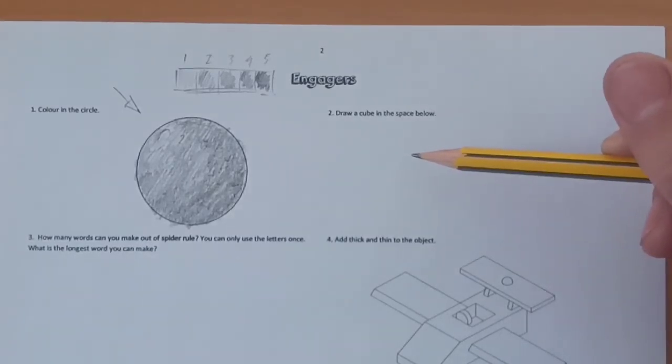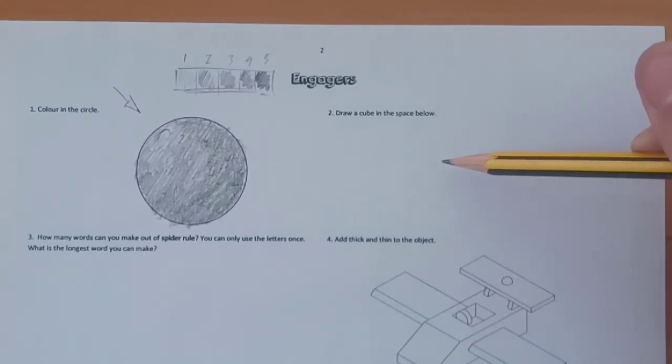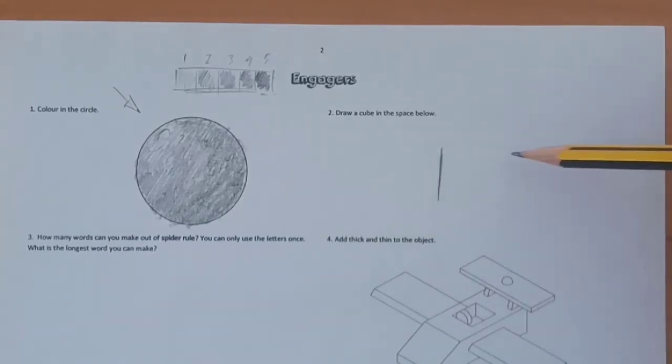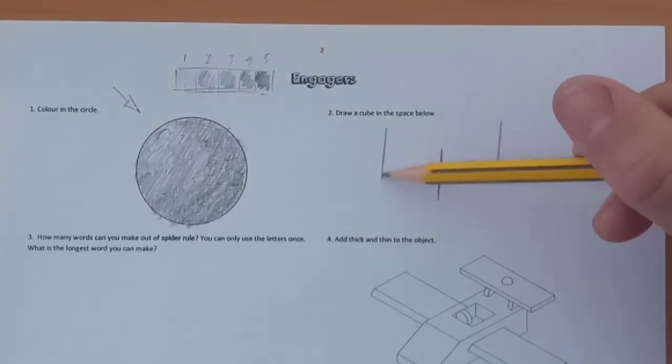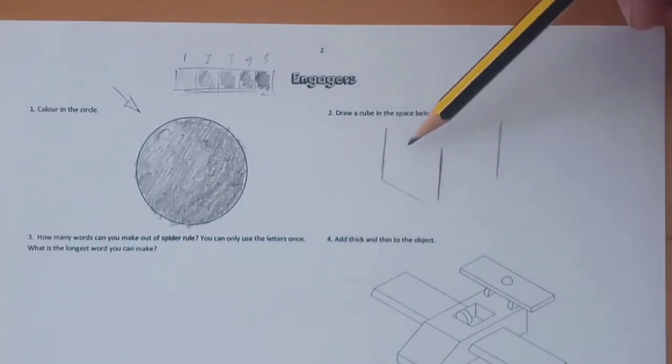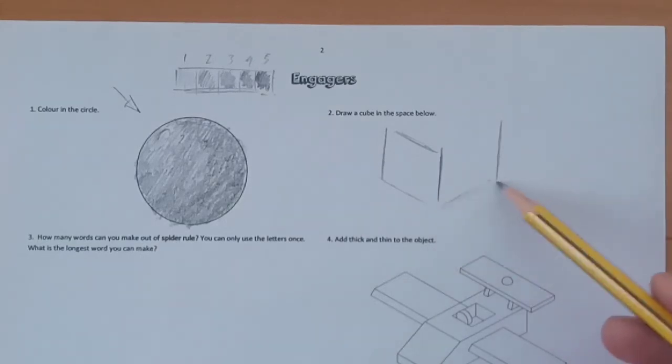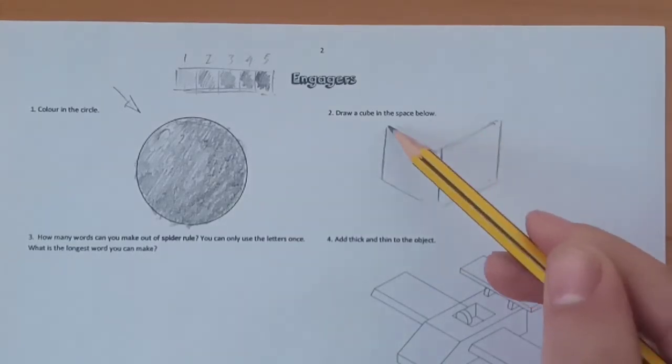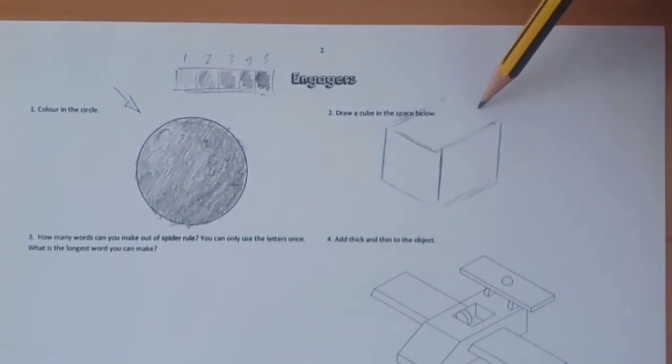Moving on to Engager 2. For this, we're going to need to draw a 3D cube. First thing to do is start off with a 90 degree line. Once we've established the first line, we can then set two more lines to the side. From there, link up the lines, drawing across approximately 30 degrees to create an isometric cube.